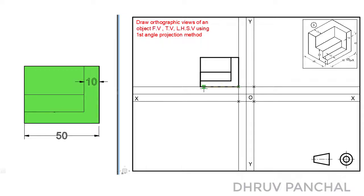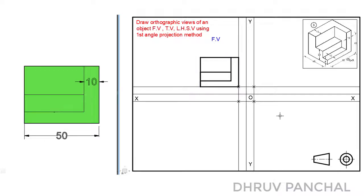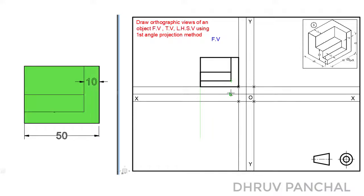Let me show you the dimensions of this front view so that you can draw it easily. Also, name the view, which is the front view. To draw the top view, take the projections of each point of the front view in the downward direction as shown.